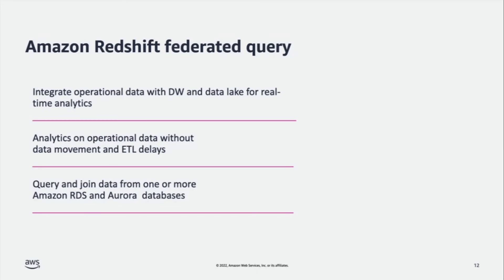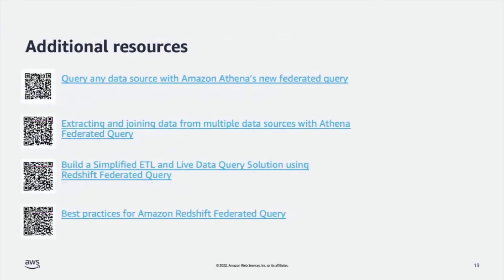So with that being said, this was a small overview of federated querying with Amazon Athena and Amazon Redshift. We have a few additional resources here that can help you dive deeper or try it out yourself. There are blogs and a best practices article on running federated query on Amazon Redshift, discussing how to maximize the benefits of federated query with large federated data sets and large volumes of data. Thank you for your time. Have a good day.